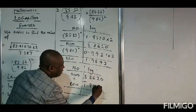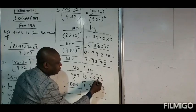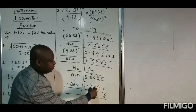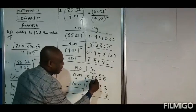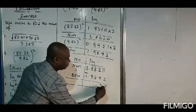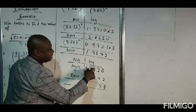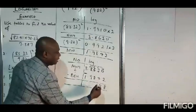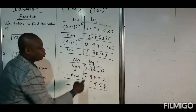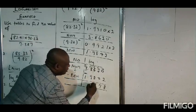We subtract. Zero cannot subtract two, so I borrow one from here — this will remain one and this becomes ten; ten minus two is eight. I have one left; one cannot subtract four, so I borrow from the six — six becomes five, and one becomes eleven; eleven minus four is seven. Five cannot subtract eight, so I borrow from eight — eight becomes seven, five becomes fifteen; fifteen minus eight is seven. Seven cannot subtract nine, so I borrow from three — three becomes two, seven becomes seventeen; seventeen minus nine is eight.